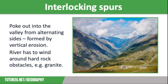We are going to start off by looking at how interlocking spurs form. Interlocking spurs poke out of the valley from alternate sides. They are found in narrow steep V-shaped valleys with convex slopes where the river channel takes up most of the valley floor. They are formed by vertical erosion, which is mainly hydraulic action deepening the channel.